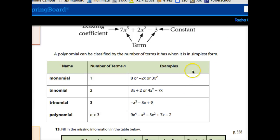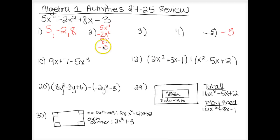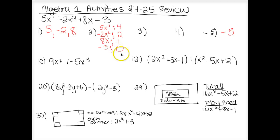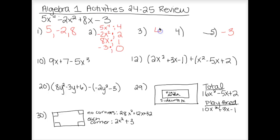For each term, list the degree. By definition, the degree is the exponent on the term. Here the exponent is 4, so that's its degree. For the next term, the exponent is 2. Where there's no exponent written, it's understood to be 1. Where there's no variable at all, those are trickier — constants are always degree zero. Number three asks for the degree of the polynomial, which is the highest exponent that appears. The highest exponent in this polynomial is 4, so that's the degree.